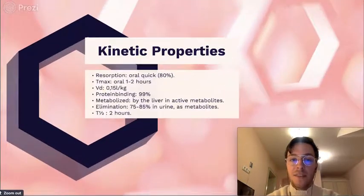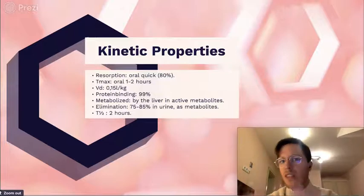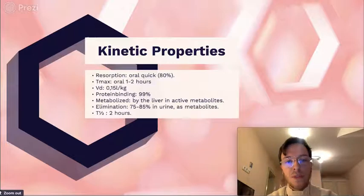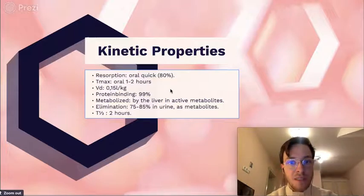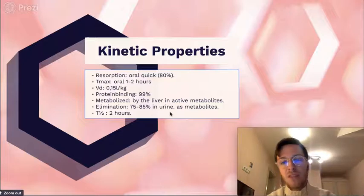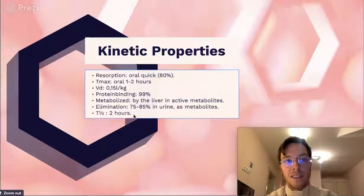Lastly, some kinetic properties: resorption is quick orally, with Tmax orally at one to two hours. Distribution volume is 0.15 liters per kilogram. Protein binding is almost 100%. It is metabolized by the liver with active metabolites. Elimination is mostly done by urine, and the half-life is approximately two hours.